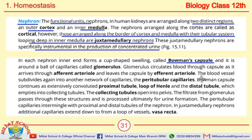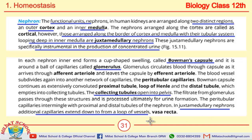A cup-shaped swelling at the inner end of each nephron is called the Bowman's capsule, which contains the glomerulus. An important MCQ: the collecting tubules open into the pelvis. In juxtamedullary nephrons, additional capillaries extend down to form a loop of vessels called the vasa recta, because these nephrons are at the cortex-medulla border and their extra capillaries extend to form this loop.